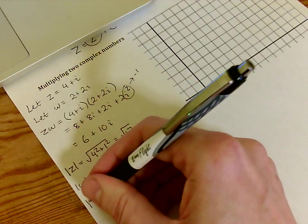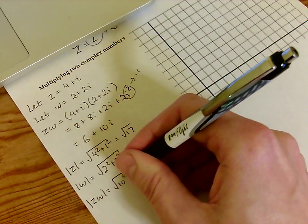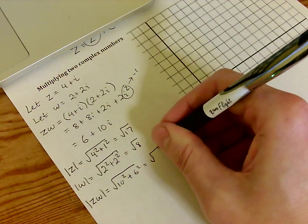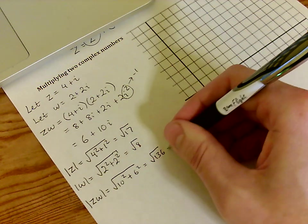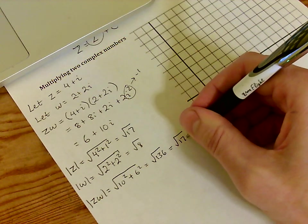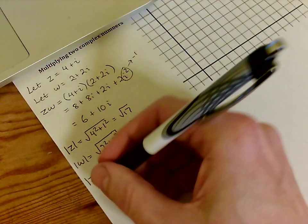Now if we compute the absolute value of z times w, that's the square root of 10 squared plus 6 squared, which turns out to be 136, which I'm sure you can see in your head is simply the square root of 17 times 8. So cool little theorem here that we've just sort of proven by example.